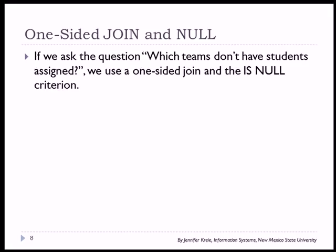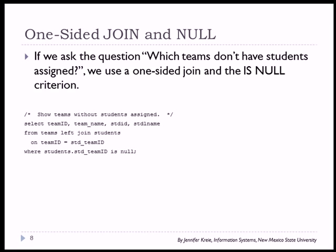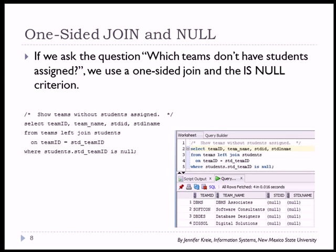What if we have the question, which teams don't have students assigned? So we're doing a one sided outer join and we're eliminating some data because we only want to see data that has a null value for the student. So what we have is the from clause teams left join students because we want to see all teams to start with. Then we put in the criteria where students team ID student team ID is null. And so we run that query. And what we see is these are the four teams for which there is no associated student.